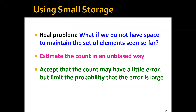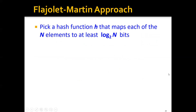A real problem with the obvious approach is: what if we do not have space to maintain the set of elements seen so far? What if we need a very large hash table that we cannot afford? In this case, the best we can do is estimate the count in an unbiased way. We need to accept that the count may have a little error, but we can limit the probability that the error is too large.